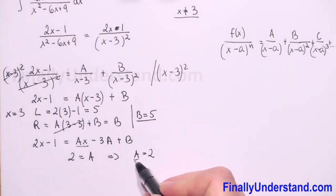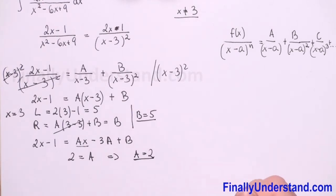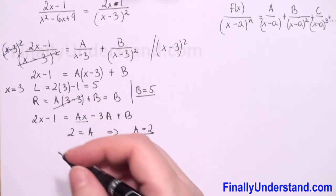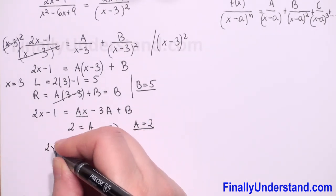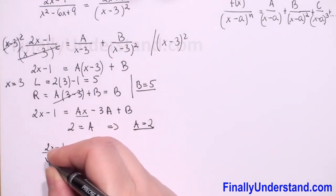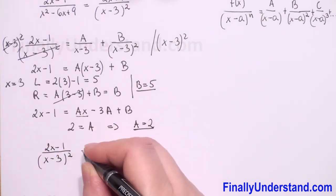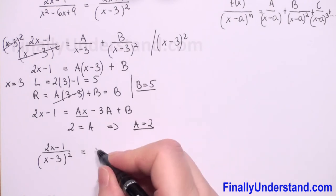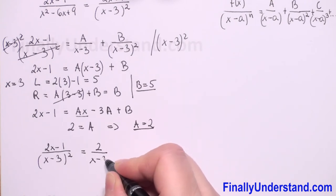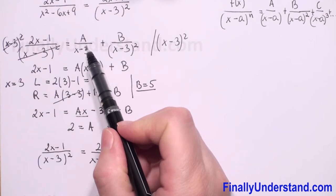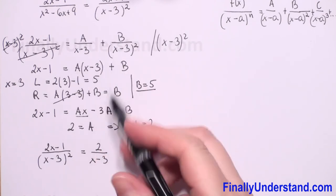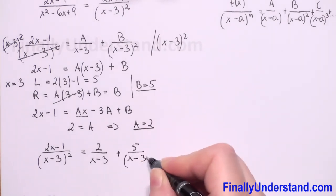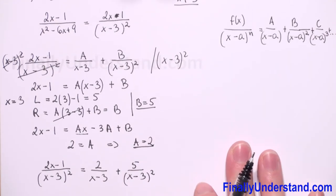Now we can rewrite our rational fraction as a sum of partial fractions. We have 2x minus 1 over (x minus 3) squared equals 2 over (x minus 3) plus 5 over (x minus 3) squared, where A equals 2 and B equals 5.